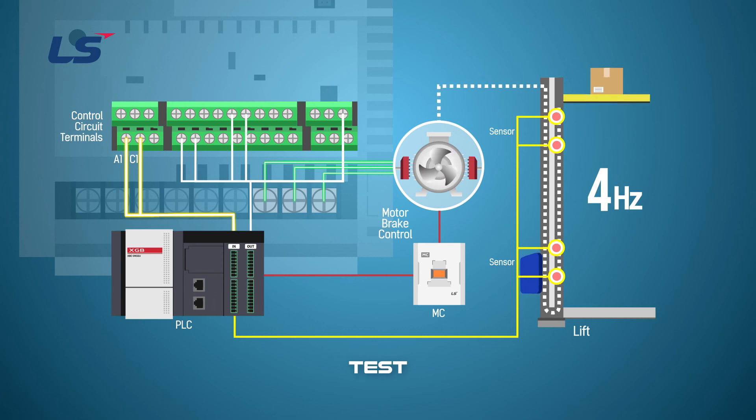When the operation signal of P1 and P5 are turned off, it decelerates and the brake closes and stops.